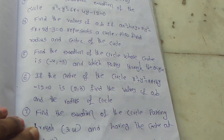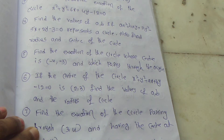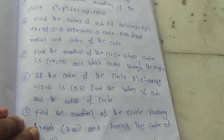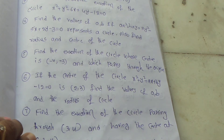Sixth question: If the center of the circle x square plus y square plus ax plus by minus 12 equal to 0 is (2, 3), find the values of a and b and the radius of the circle.